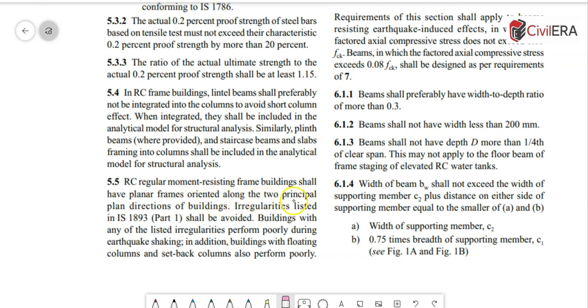Irregularities listed in IS 1893 shall be avoided. Buildings with any of the listed irregularities perform poorly during earthquake shaking. In addition, buildings with floating columns and setback columns also perform poorly.